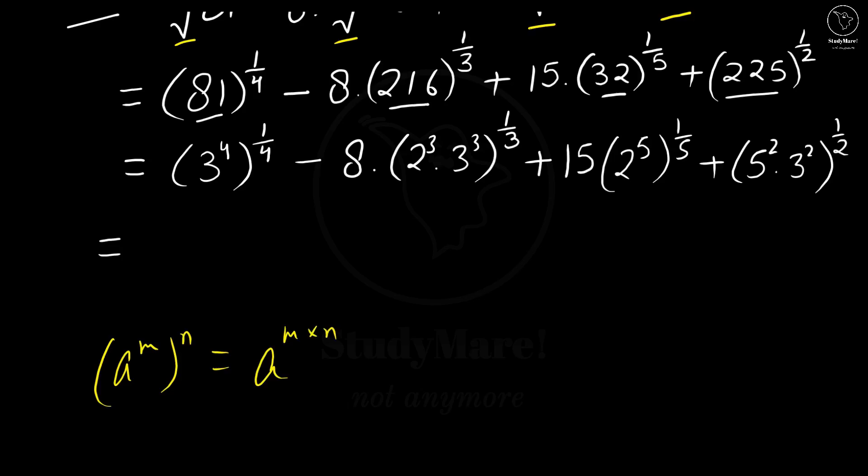While, the other identity is a into b whole to the power m is equal to a to the power m into b to the power m. So we are going to use these 2 identities with different terms. For example, the first one that is 3 to the power 4 whole to the power 1 by 4. This is identical to the identity written in yellow. So we get 3 to the power 4 into 1 by 4, that is a to the power m whole to the power n is equal to a to the power m into n.